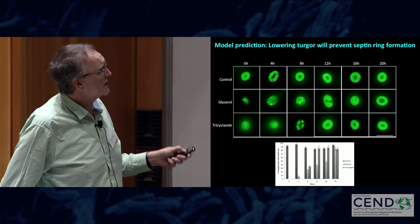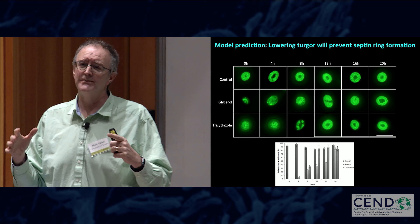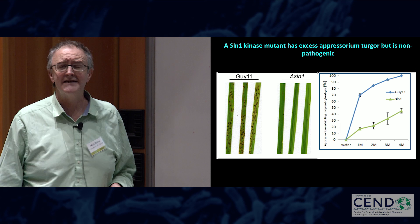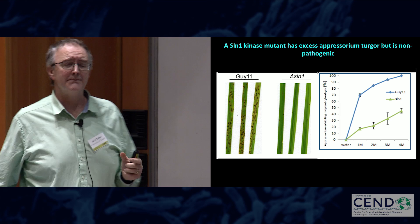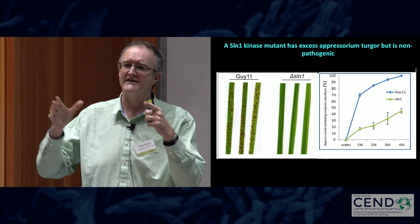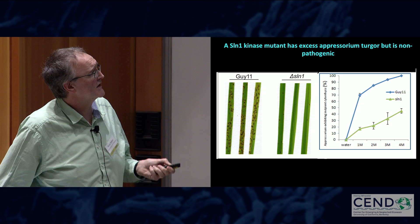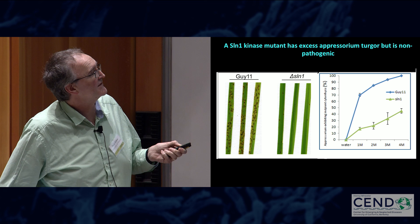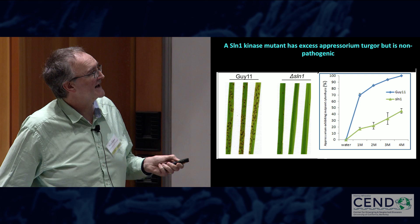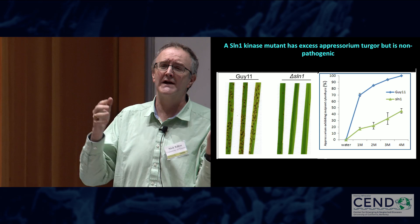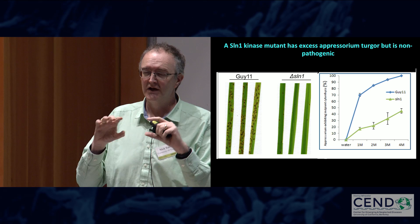All downstream events are determined by the cell having achieved a threshold of turgor. We've recently identified a turgor-sensing kinase — the SLN1 histidine aspartate kinase — which seems to be important for modulating turgor and acts as a master regulator for the downstream processes that lead to appressorium repolarization. In an SLN1 mutant, which is non-pathogenic on rice, if we measure internal pressure by incubating in hyperosmotic glycerol, the mutant continually develops pressure but is never able to repolarize — never able to convert that pressure into physical force and cytoskeletal reorientation.